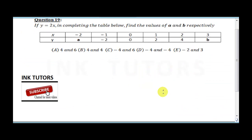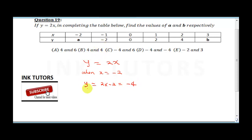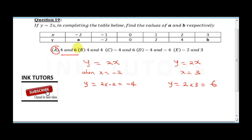Question 19 says: if y equals 2x, complete the table to find the values of a and b. To find a, when x is −2, y equals 2 times −2, which is −4. So a is −4. To find b, when x equals 3, y equals 2 times 3, which is 6. So b is 6.